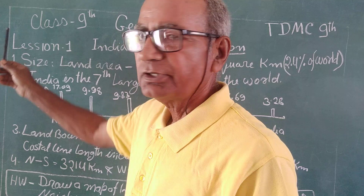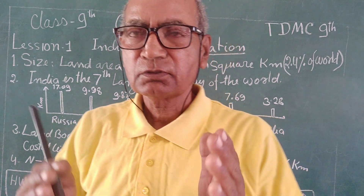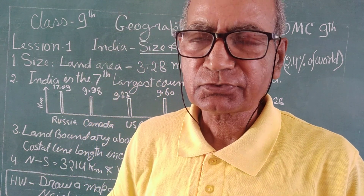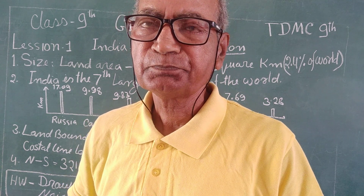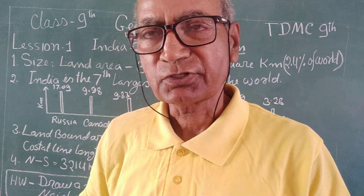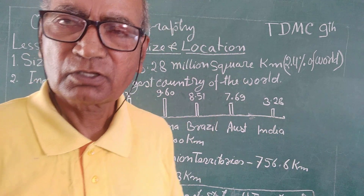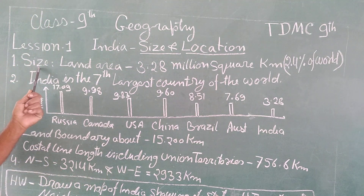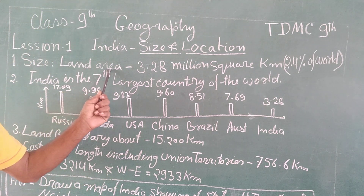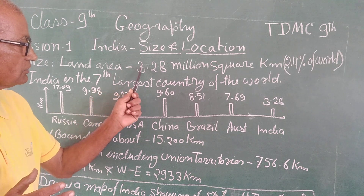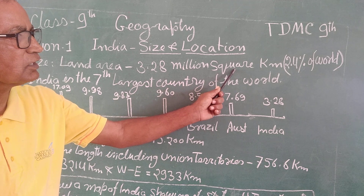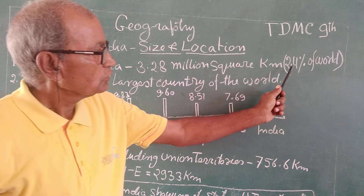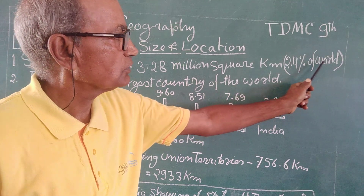In this lesson, you will study what is the exact position of India in the map of the world — its boundaries, land boundary, and total area. First of all, I will start with size. The land area of our country is 3.28 million square kilometers, and this area is 2.4 percent of the world area.